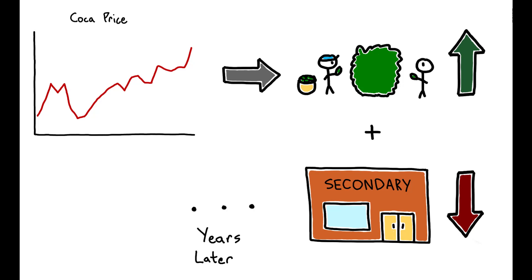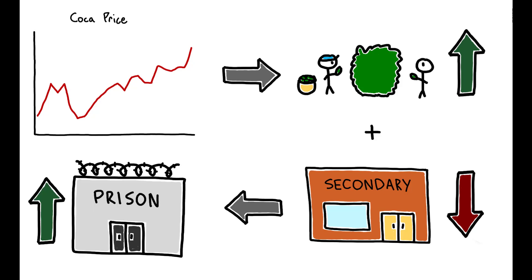What happens in the long term? Relative to their unaffected counterparts, are treated children more likely to be engaged in criminal activity as adults? The short answer is yes. Individuals who grew up in coca-producing areas and who experienced high coca prices during their childhood are about 30% more likely to be incarcerated as adults.